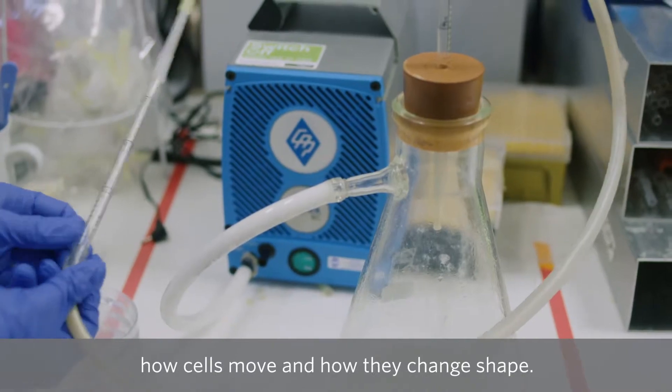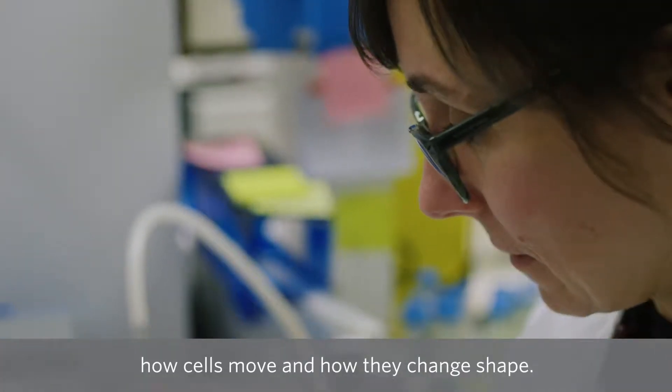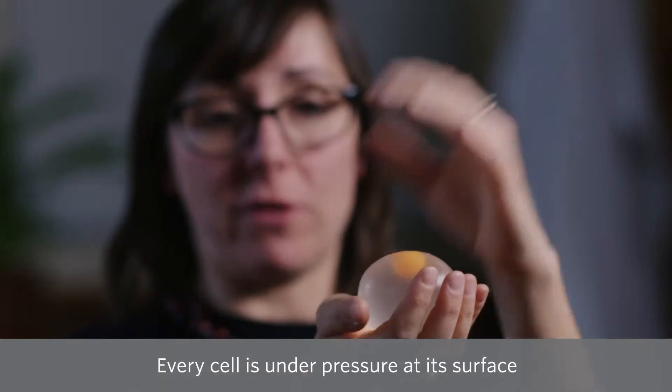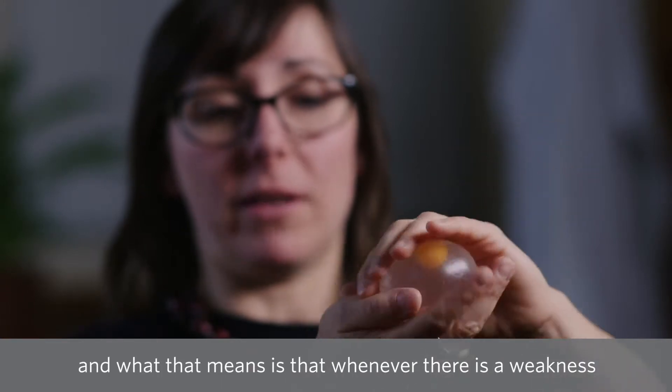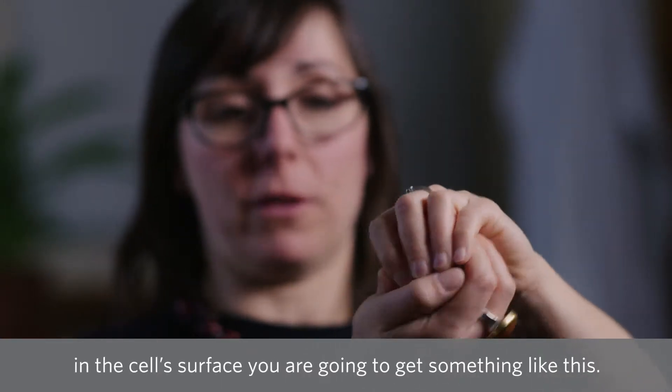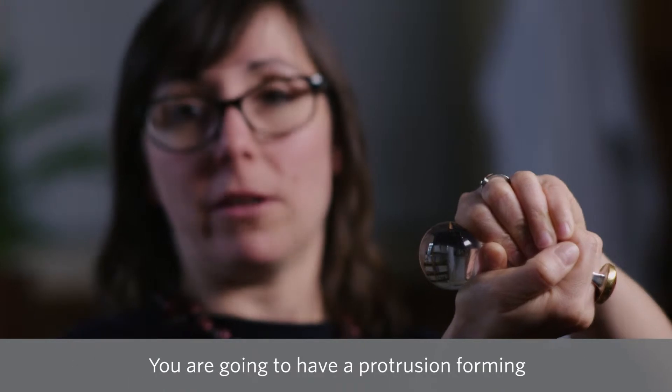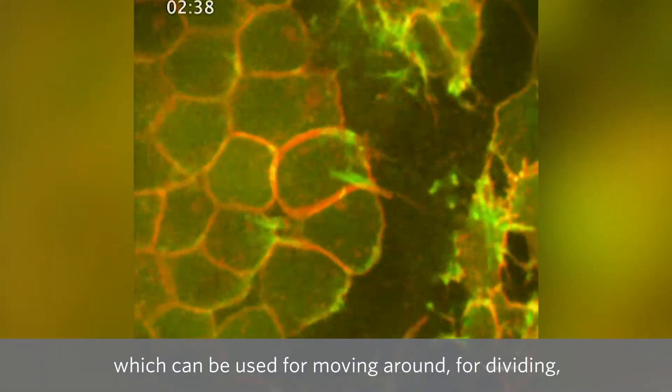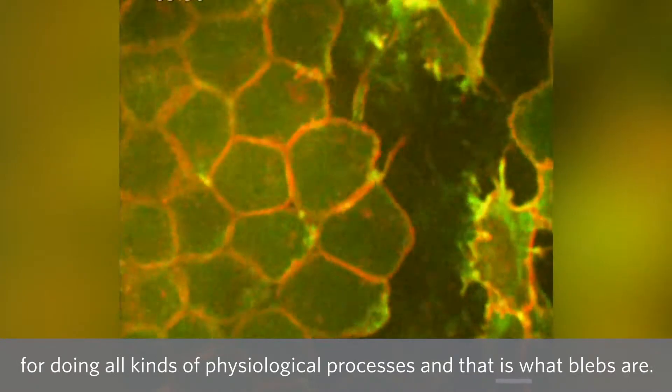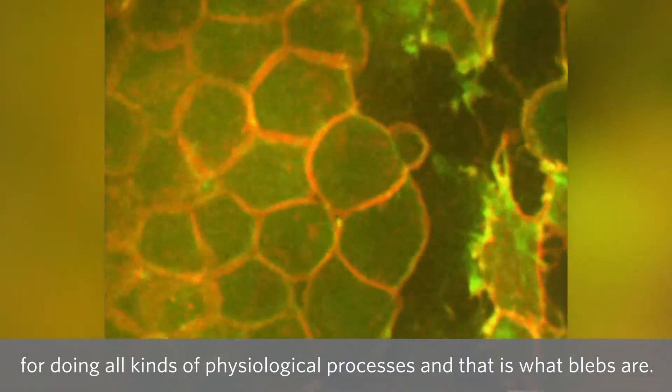What we're trying to understand is how cells move and how they change shape. Every cell is under pressure at its surface, and what that means is that whenever there's a weakness in the surface, you're going to get something like this. You're going to have a protrusion forming which can be used for moving around, for dividing, for doing all kinds of physiological processes. That's what blebs are.